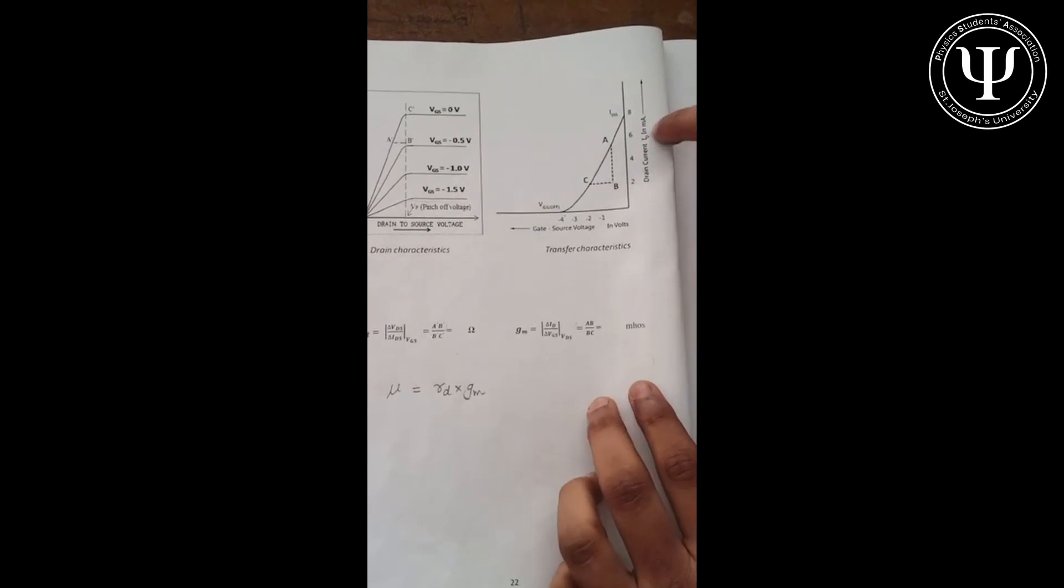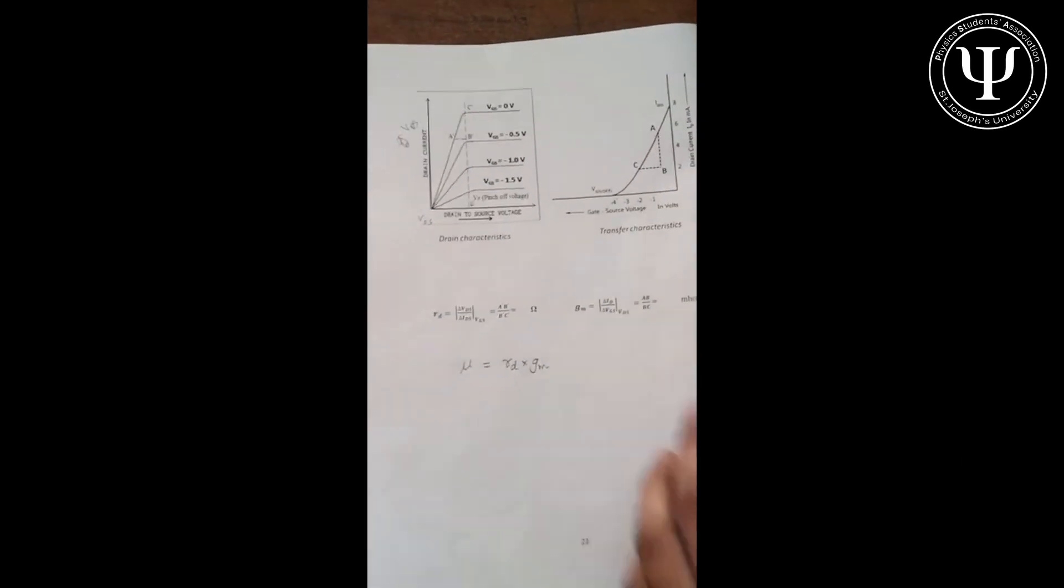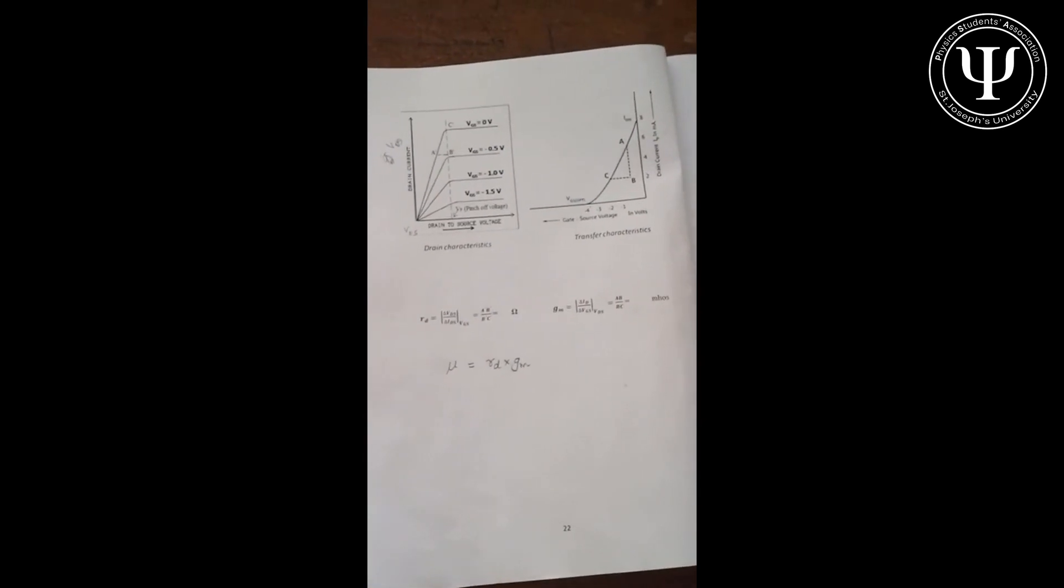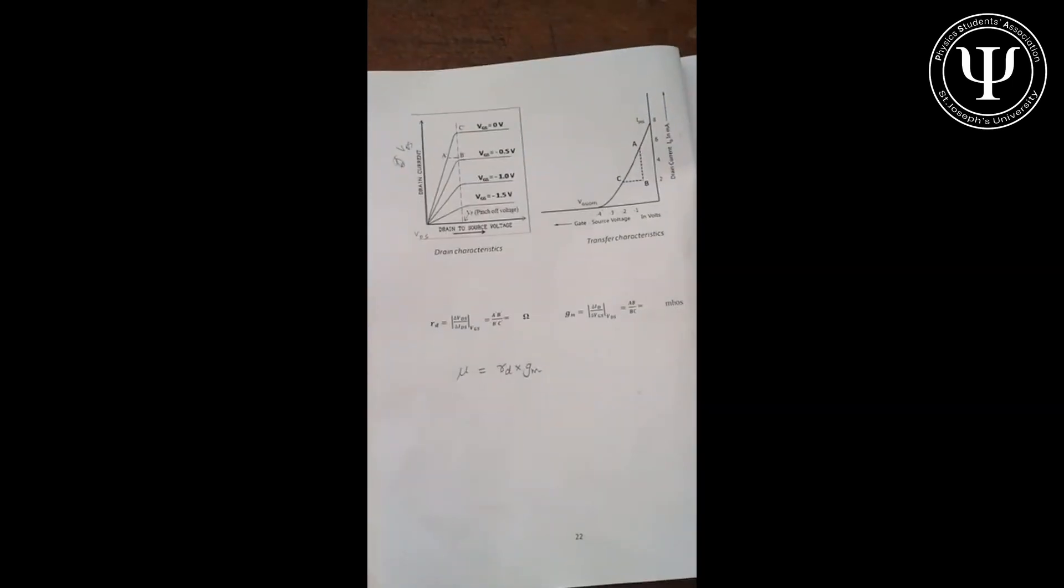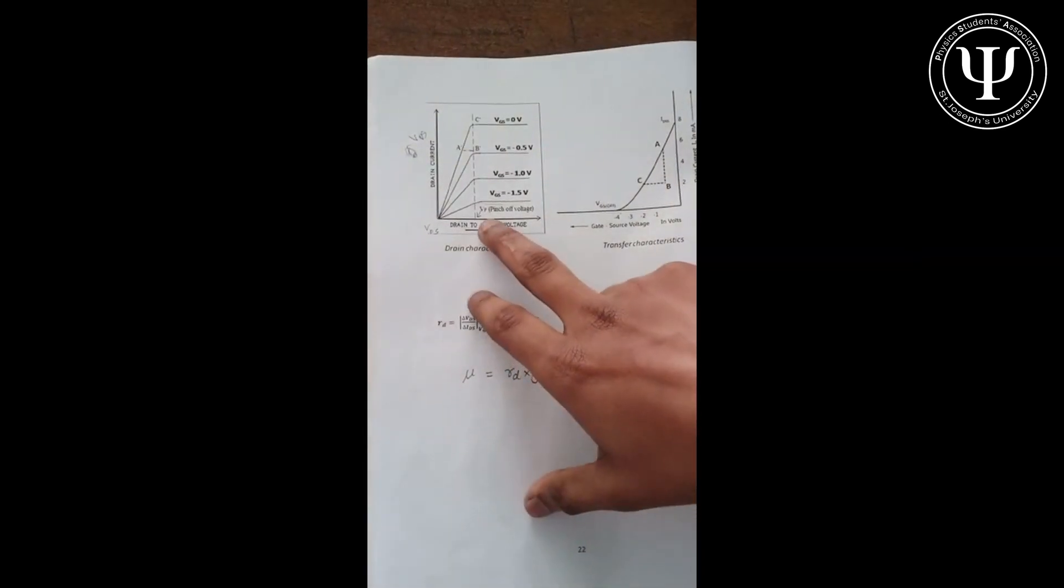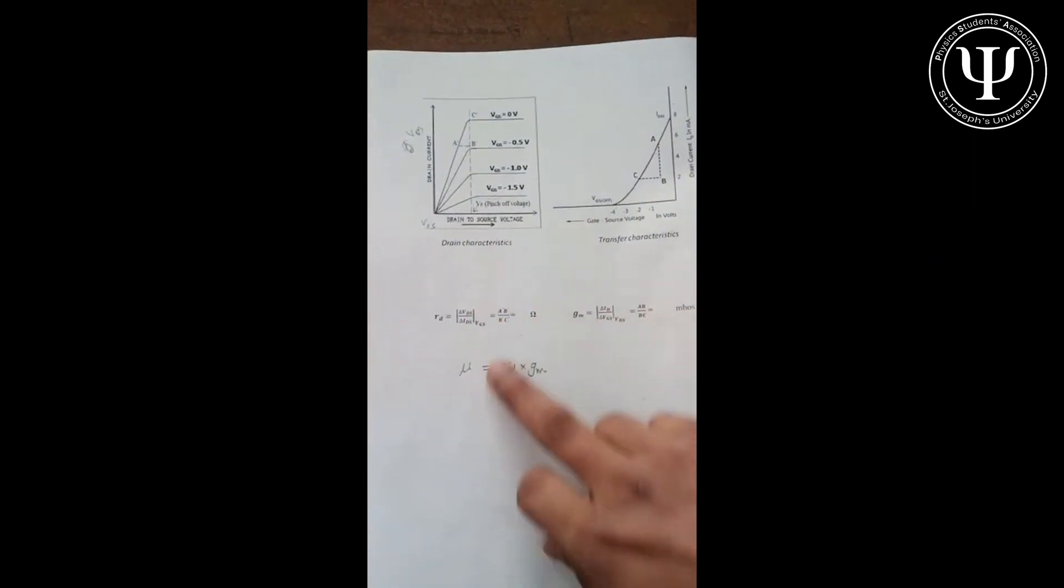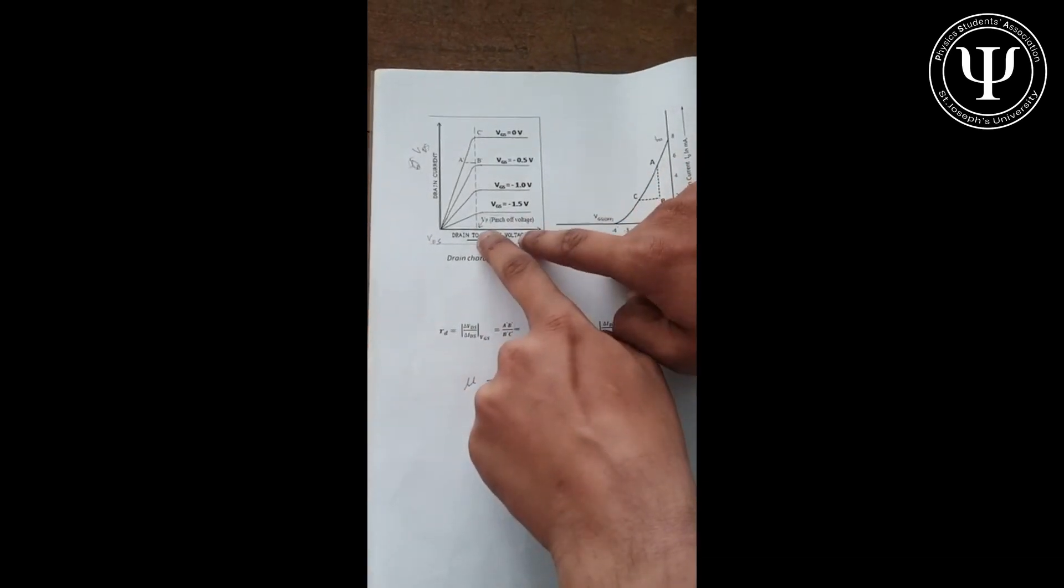However, for transconductance, you don't need to do this. Just take the output characteristics graph and find the slope, like ΔB by ΔC, and that's what's given here. Now we come to the third: the amplification factor. This is nothing but multiplying these two values, and that's μ. Pinch-off voltage is directly obtained from the graph. You just use the input characteristic, the drain characteristic, and calculate VP here. That's about it.